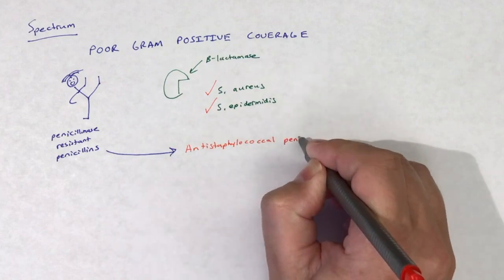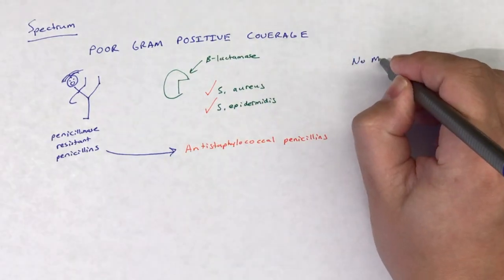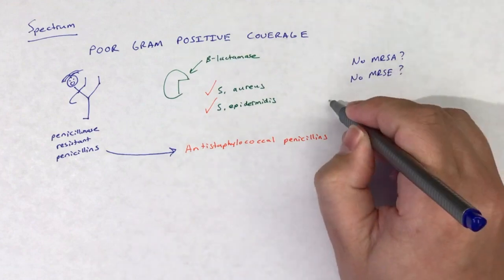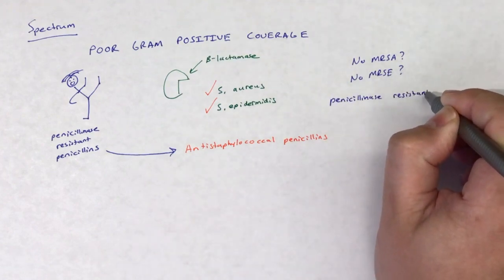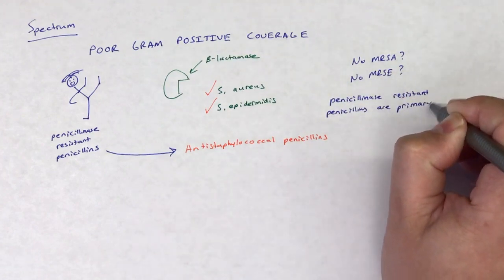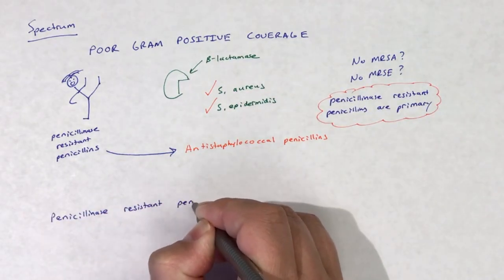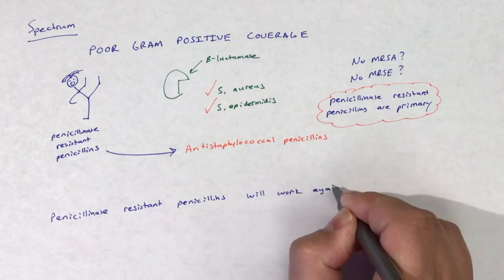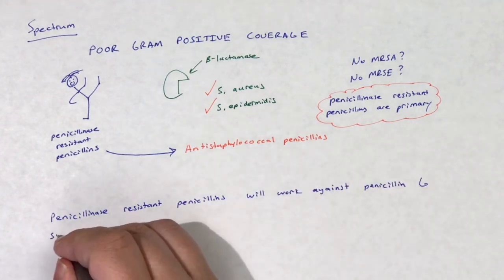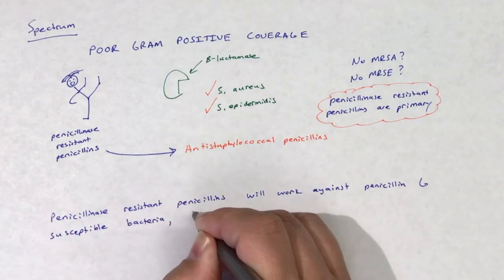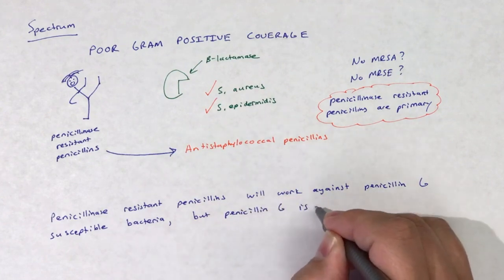The penicillinase-resistant penicillins are sometimes referred to as the anti-Staphylococcal penicillins due to their use in Staphylococcal species, and they are considered the primary antibiotic for Staphylococcal infections once methicillin-resistance has been ruled out. Though sometimes effective, penicillinase-resistant penicillins are generally less effective against Penicillin-G-susceptible bacteria.